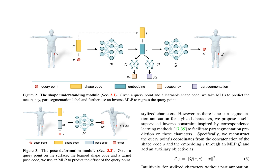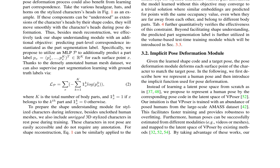For stylized characters without part segmentation annotation, a self-supervised inverse constraint is proposed to facilitate part segmentation prediction. The pose deformation module represents a human pose by the corresponding pose code in the latent space of vPoser, trained with an abundance of posed humans from the large-scale AMASS dataset. The module uses an MLP to predict the offset of the query point given the learned shape code and a target pose code. An efficient volume-based test-time training procedure is introduced for unseen stylized characters. The method is trained only with posed, unclothed human meshes and unrigged stylized characters in rest pose, and is directly applied to unseen stylized characters at inference.